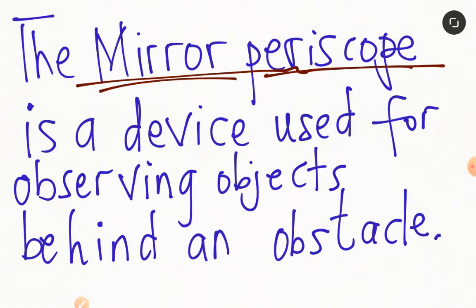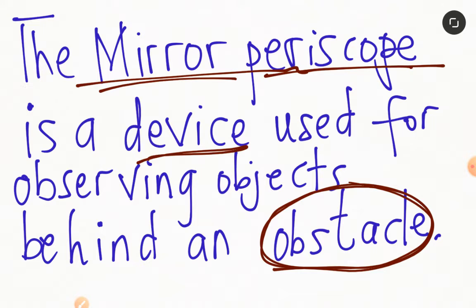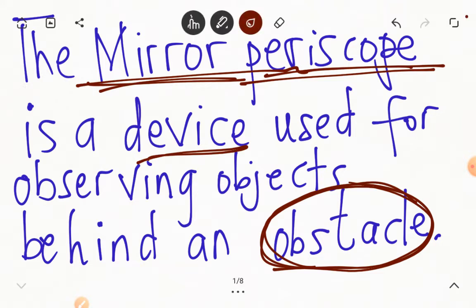First, the definition or the use of a mirror periscope. The mirror periscope is a device that is used for observing objects behind an obstacle. So if you're trying to observe an object and you are blocked by an obstacle, then the technology you want to use is the mirror periscope. At least this was a technology that was employed before the inception of cameras.